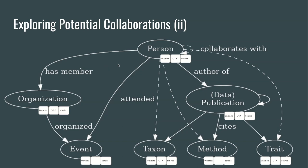The kinds of collaborations we have mechanisms for exploring include: the organization has a member who is a person; the organization organized an event; the person attended an event; the person is indirectly linked to taxa via data or publications; the person is also indirectly related to methods because they're an author of data or a publication that cites the method; and researchers are also indirectly related to traits via publications. Open Trades Network members are also connected to each other by way of collaborations that resulted in data, publications, software or other resources.